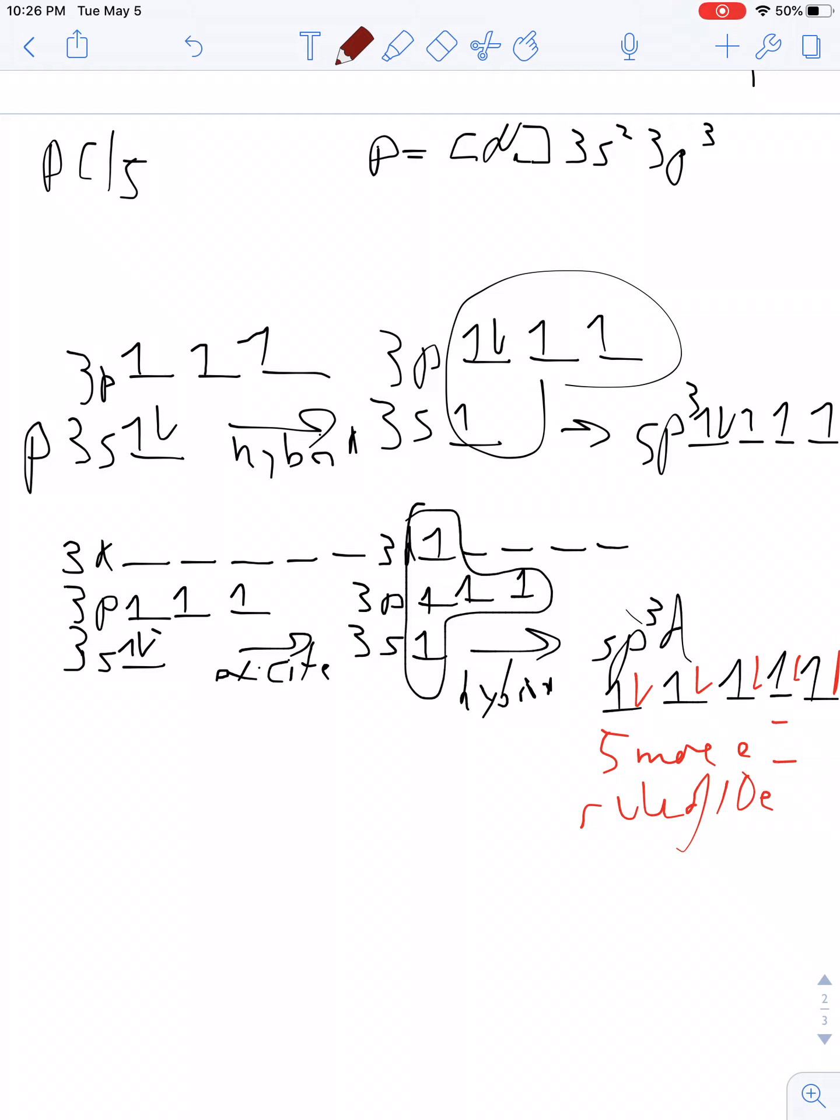Or, phosphorus could take 1, 2, 3 more for the rule of 8. And that is why phosphorus can follow the rule of 8 or the rule of 10.